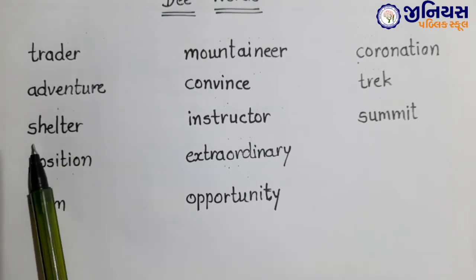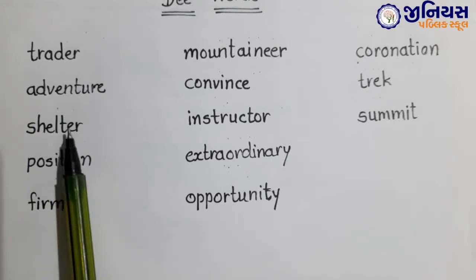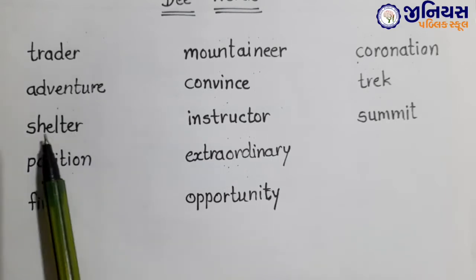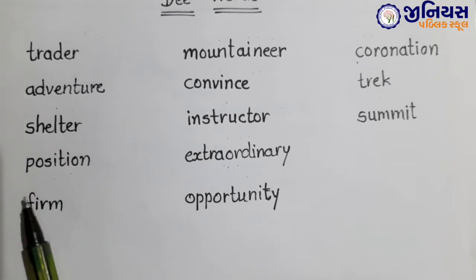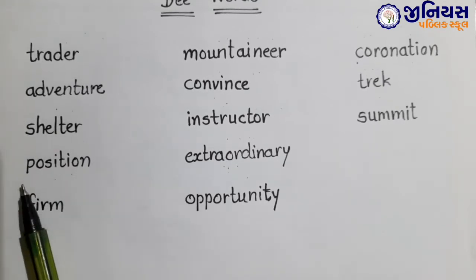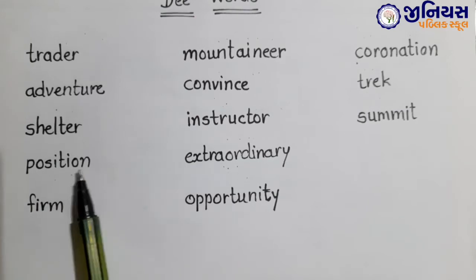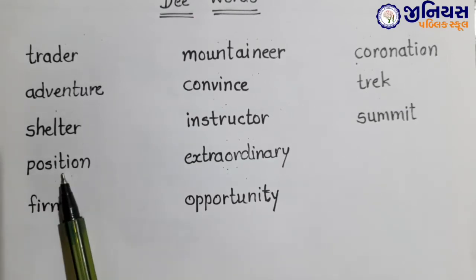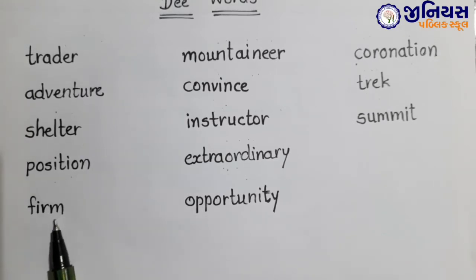Next one: shelter. S-H-E-L-T-E-R. Shelter. Shelter means asri. Next: position. P-O-S-I-T-I-O-N. Position. Position means sun. Next one: form. F-I-R-M. Form. Form means drug.